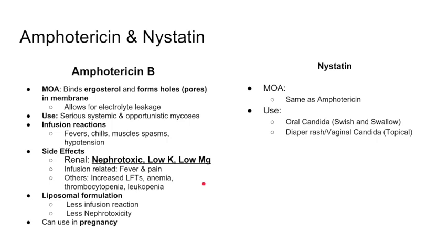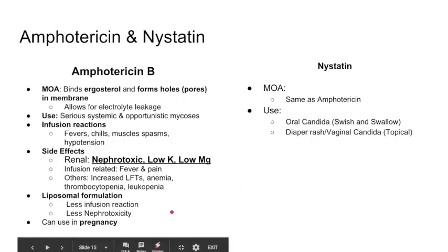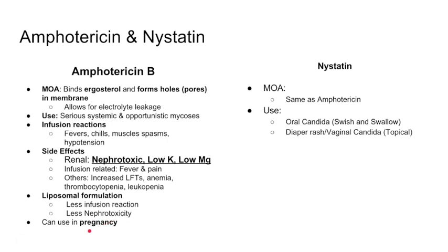Amphotericin can also cause liver function abnormalities, anemia, thrombocytopenia, and leukopenia. It is a very toxic drug — a patient coming in with a fungal infection is likely already very sick, and this drug tends to make them even sicker. To reiterate key points: it binds ergosterol, forms pores, causes cell contents to leak out. We save it for serious systemic and opportunistic infections. Key electrolyte effects include hypokalemia and hypomagnesemia. Finally, it can also be used in pregnancy if a woman presents with a systemic fungal infection.